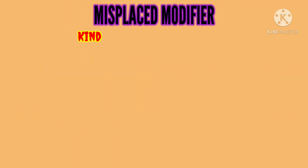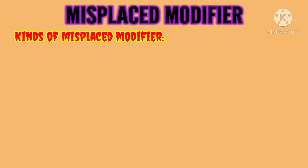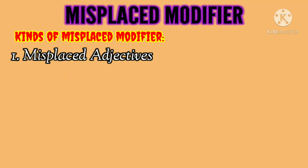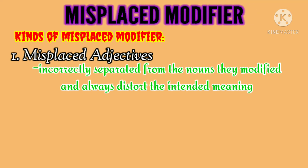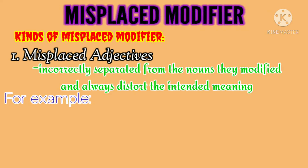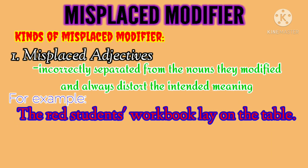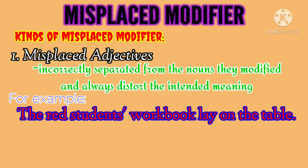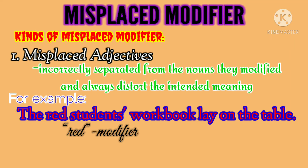There are several kinds of misplaced modifiers. The first is misplaced adjectives. Misplaced adjectives are incorrectly separated from the nouns they modify and almost always distort the intended meaning. For example: 'The red student's workbook lay on the table.' Here, the modifier is the word 'red.'